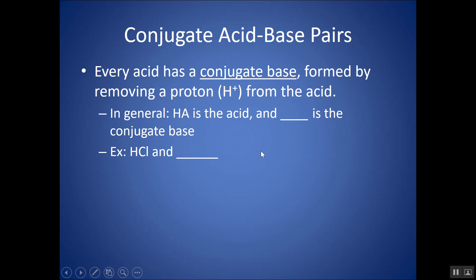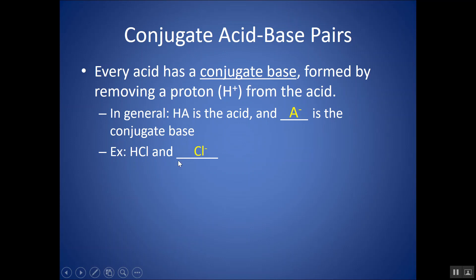Every acid has a conjugate base, formed by removing the proton or donating the H+ from the acid. If HA is your acid, A- is the conjugate base. For instance, HCl is the acid; once it donates H+, it turns into Cl-. That is the conjugate base. HCl and Cl- are a conjugate acid-base pair.